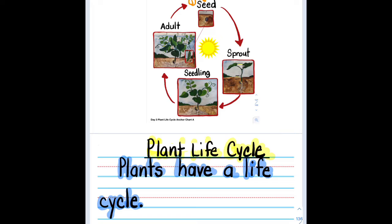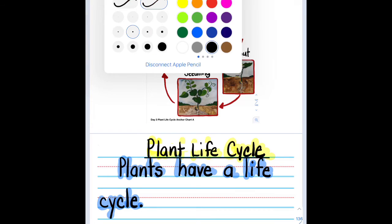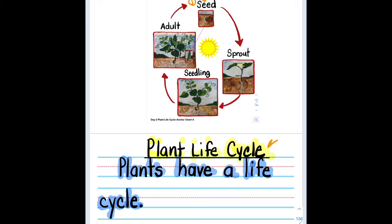So when you do an informative writing piece, you want to have your title and here's your title and you also want to have a good topic sentence. Next we need to add details. We need to tell the reader what the stages of the life cycle are. So we need details about the life cycle.